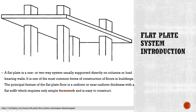Flat plate system introduction. A flat plate is a one- or two-way system usually supported directly on columns or load-bearing walls. It is one of the most common forms of construction of floors in buildings. The principal feature of the flat plate floor is a uniform or near-uniform thickness with a flat soffit, which requires only simple formwork and is easy to construct.